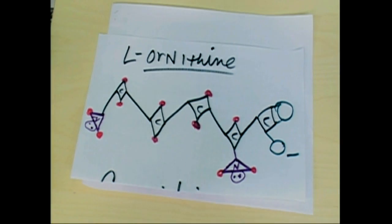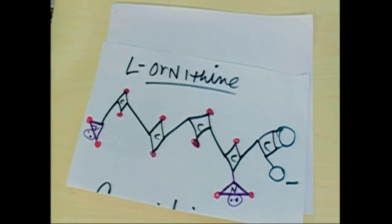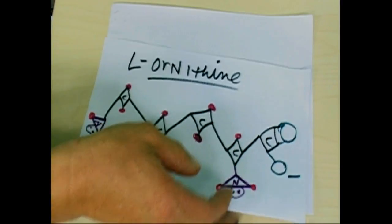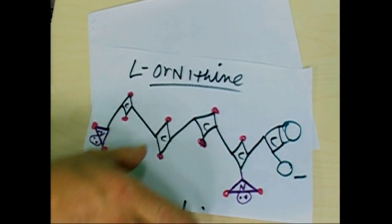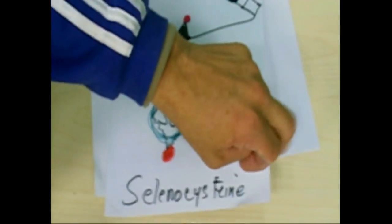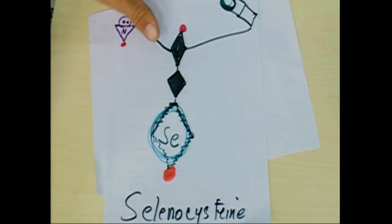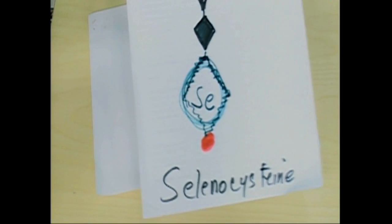These are called the post-translational amino acids. These are changed after they've been coded for. So what's neat is the DNA coded for an amino acid, knowing it didn't have a code for it, but there would be an enzyme later to fix it. So the DNA didn't code for a selenium on the end of a molecule, it coded for a sulfur, but it knew that it would get a selenium on the end of it.